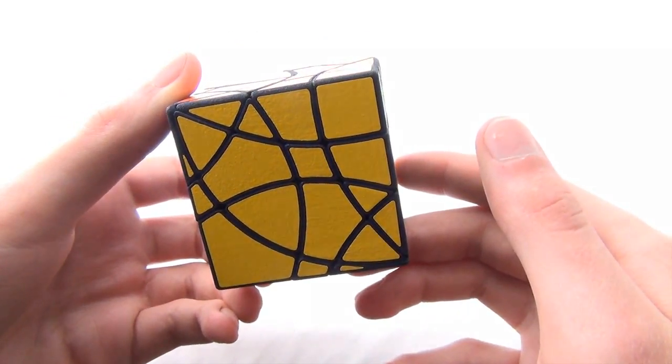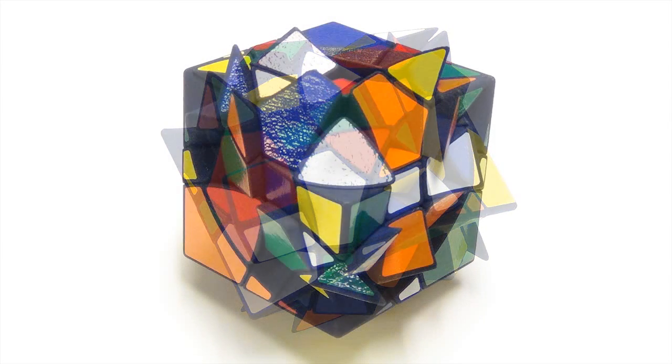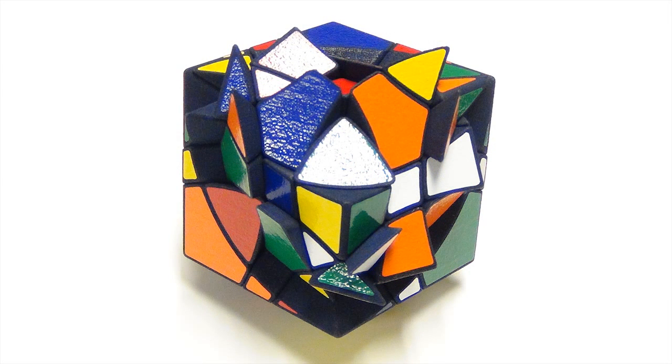So, there's one last thing that I thought I'd show with this puzzle, and that is what it looks like scrambled. What you're looking at right now is the puzzle scrambled without any jumbling moves, and you can see that the shape-shifting only occurs in those particular layers that I was talking about.